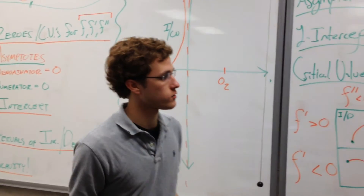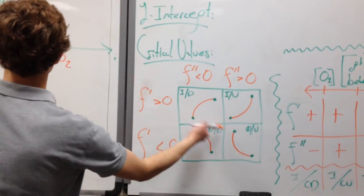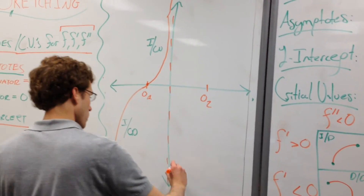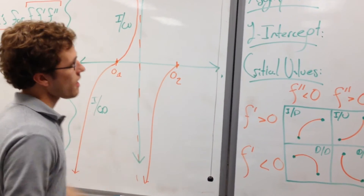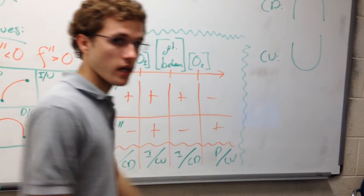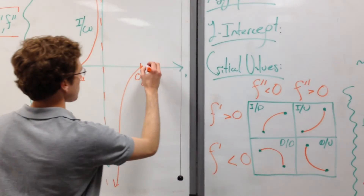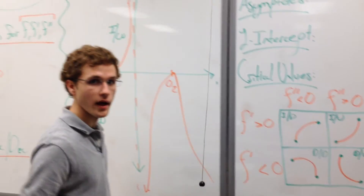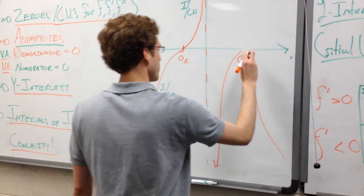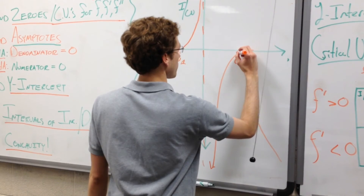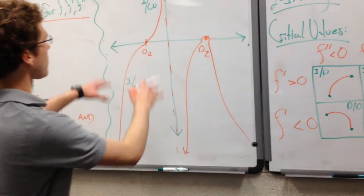Once we get to the other side of the asymptote, the function is increasing and concave down again, coming up until we hit our second zero. Then on the other side of that zero, we are decreasing and concave up — which looks like the curve going back down and opening upward. Since it's a polynomial it can't have a sharp point, so it has a curved point at the transition.